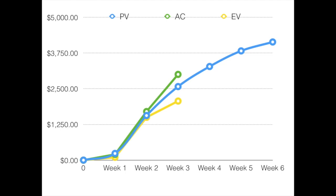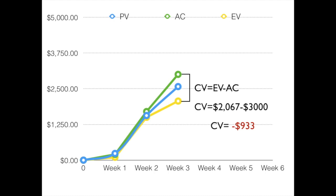Our cost variance is simply the earned value minus the actual costs. Making that calculation, we find that our cost variance is negative $933. In other words, we are currently running over budget.